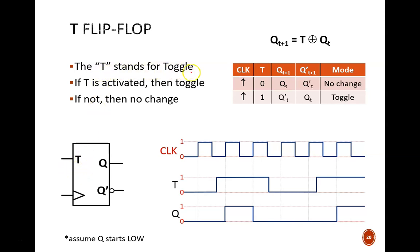The characteristic table tells us that if T equals 1, then the toggle operation is activated, and Q will change states on each clock cycle. But if T equals 0, then the toggle operation is deactivated, so Q will not change.